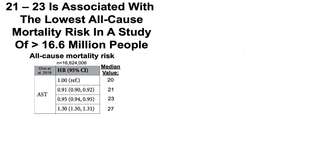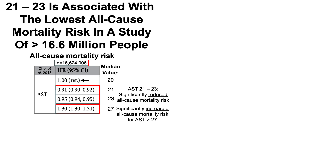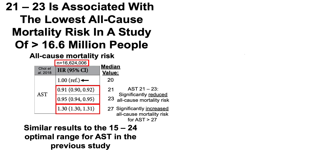That data was from a study of 416,000 subjects; an even bigger study could get closer to confirming whether this is a real effect. In the largest study I found on the association between AST levels and all-cause mortality risk — more than 16.6 million people — a median value of 20 was defined as the reference. Compared with AST of 20, the groups with median values of 21 and 23 had significantly decreased all-cause mortality risk, in line with the previous data. The group with a median value of 27 had a 1.3 hazard ratio — a 30% increased all-cause mortality risk — again similar results to the 15 to 24 optimal range from the previous study.